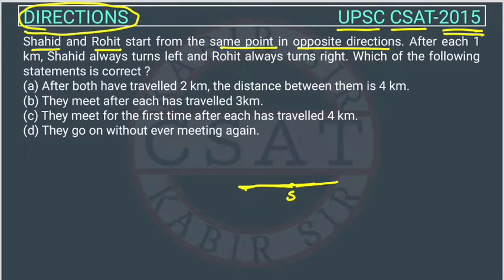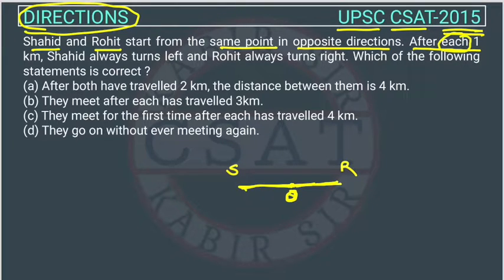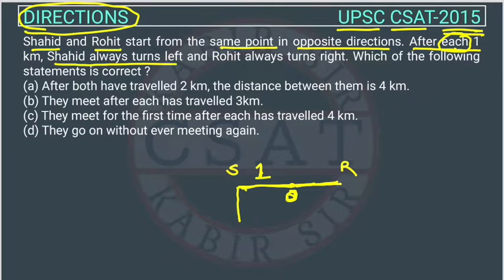Suppose this starting point is O. Shahid is going this side and Rohid is going this side. After each one kilometer — this keyword is very important — after each one kilometer, Shahid always turns left. So Shahid ek kilometer chala, uske baad woh turn lega left mein.